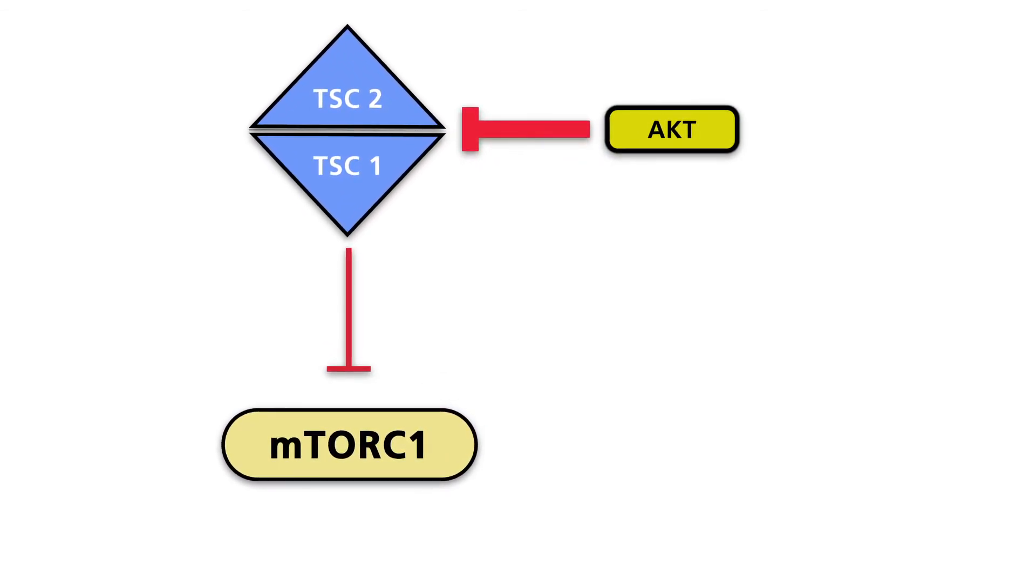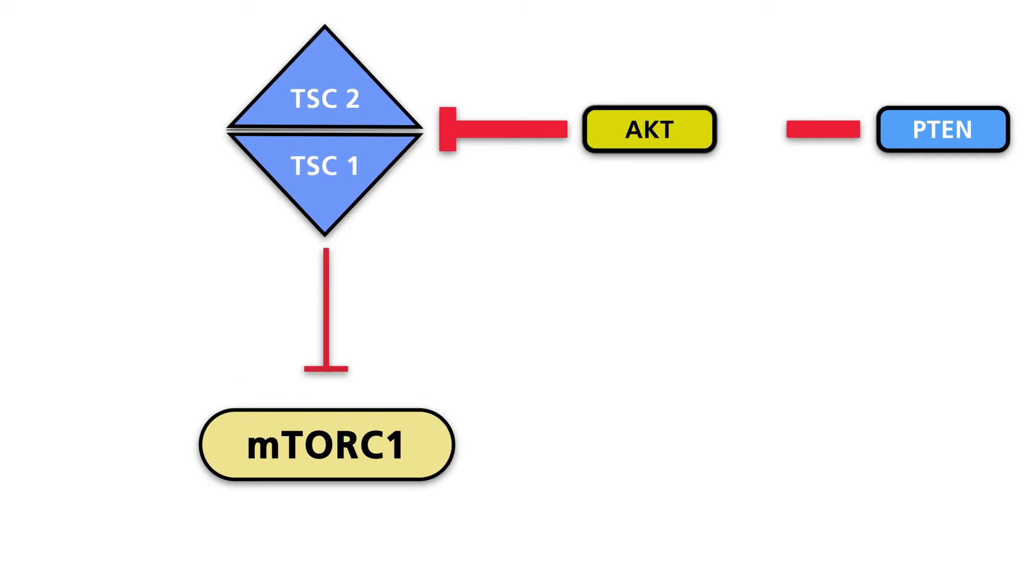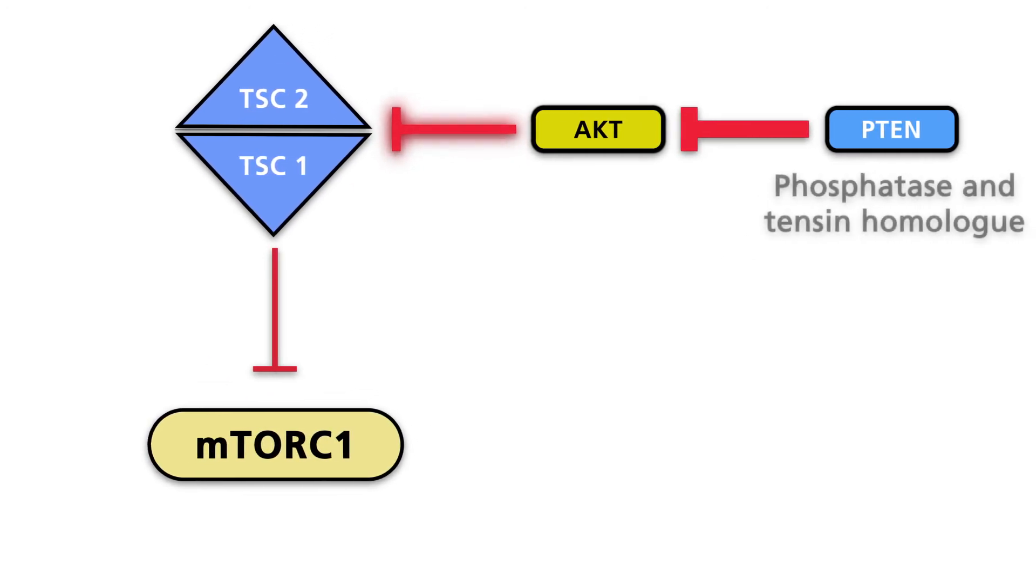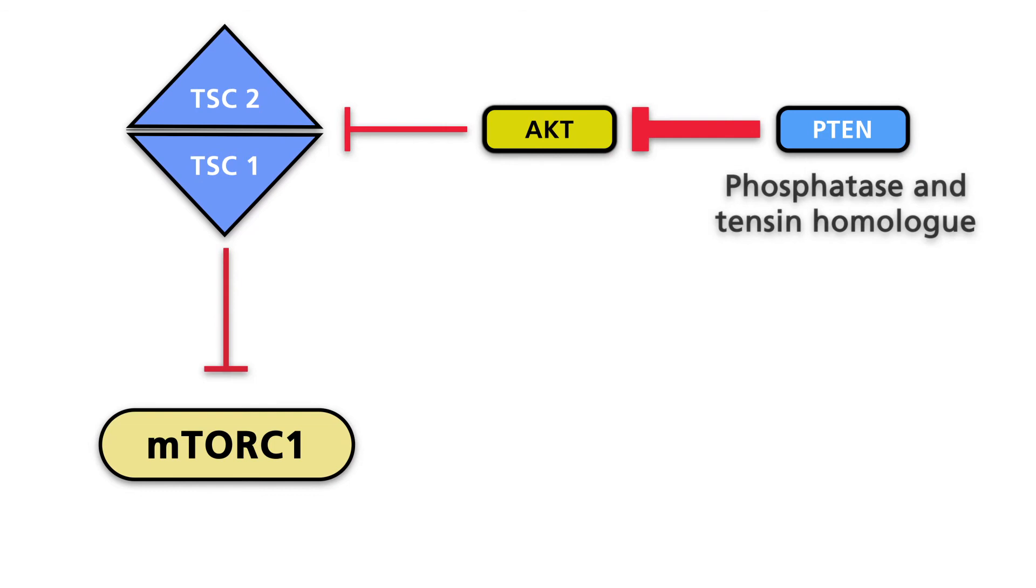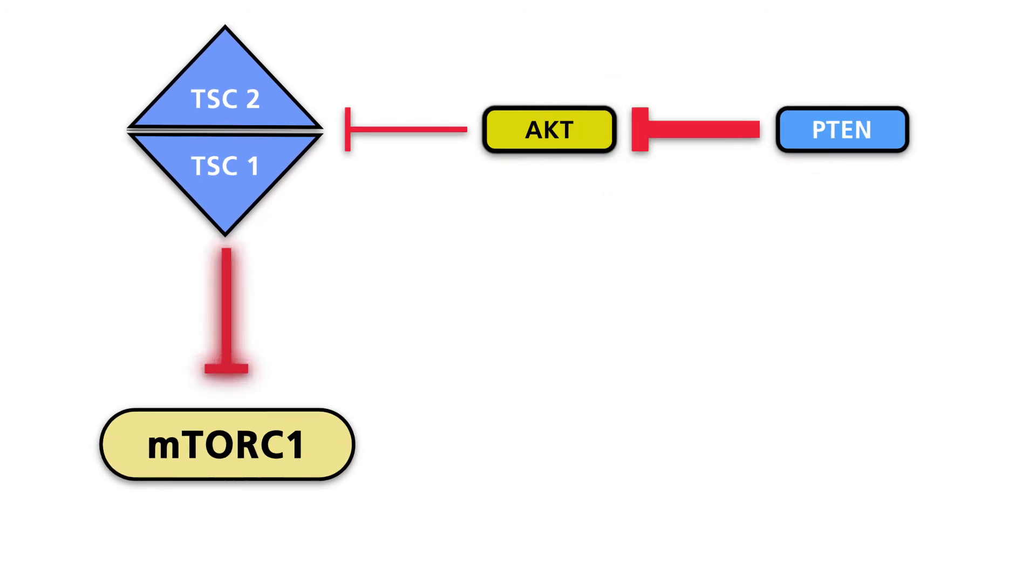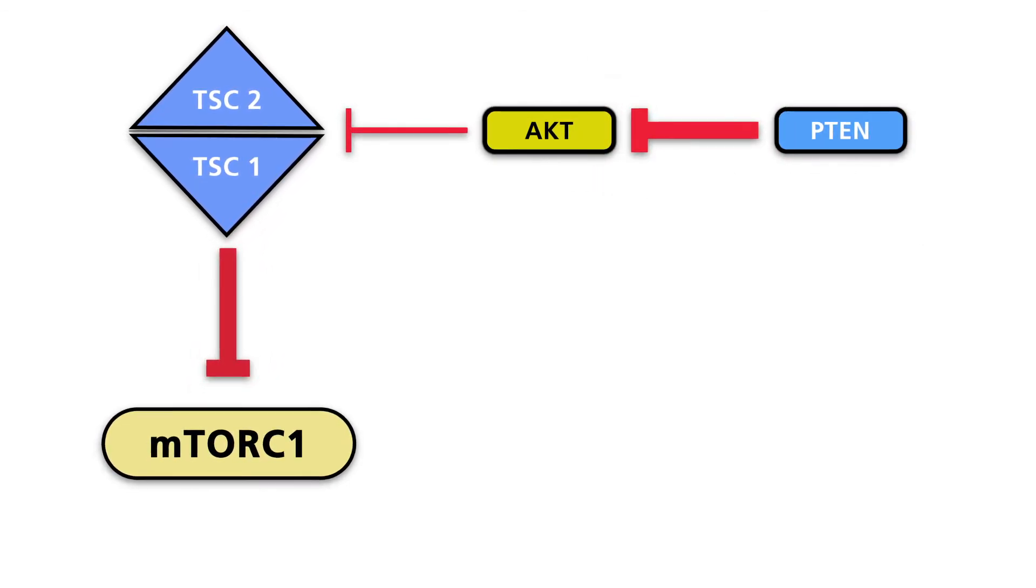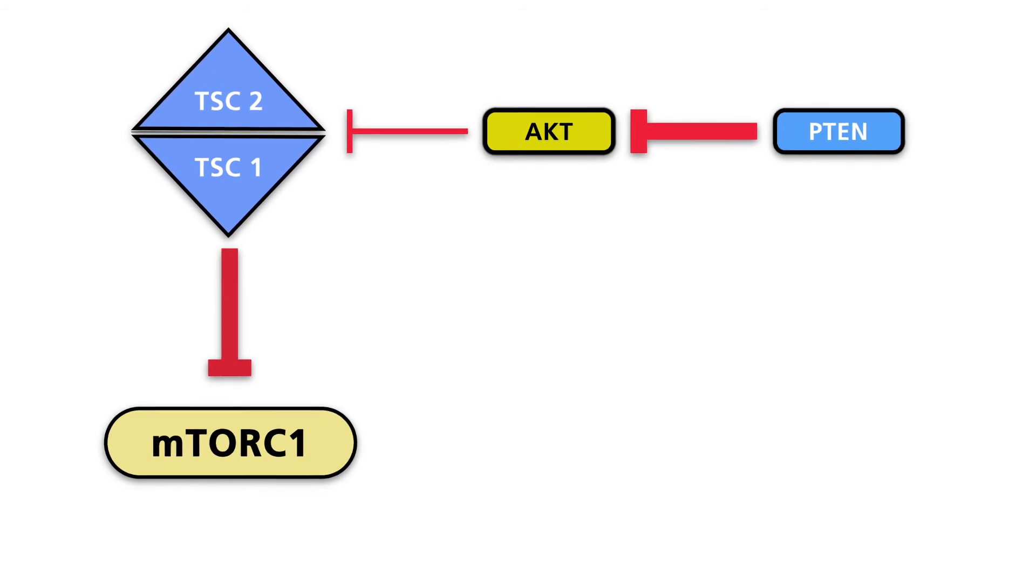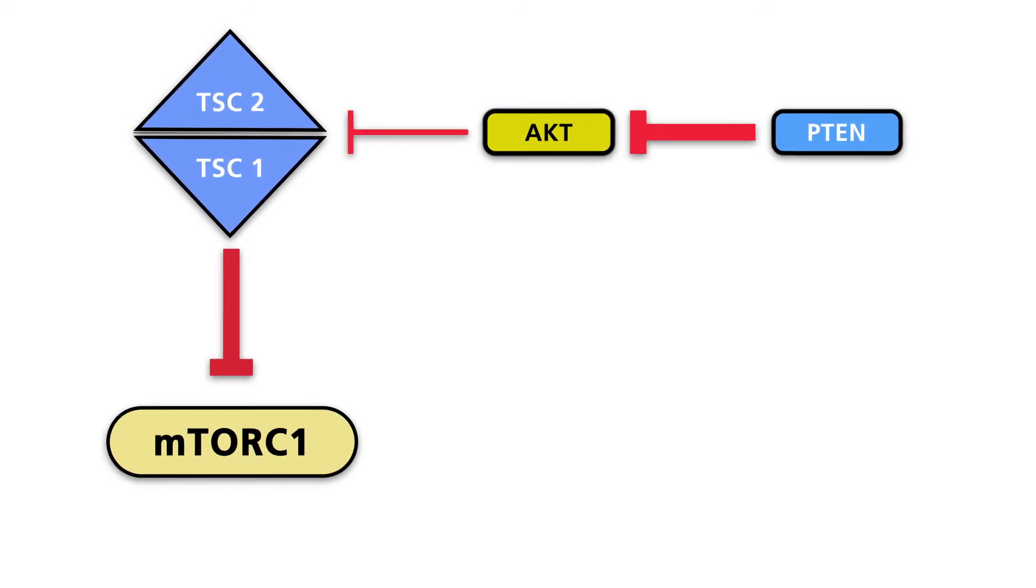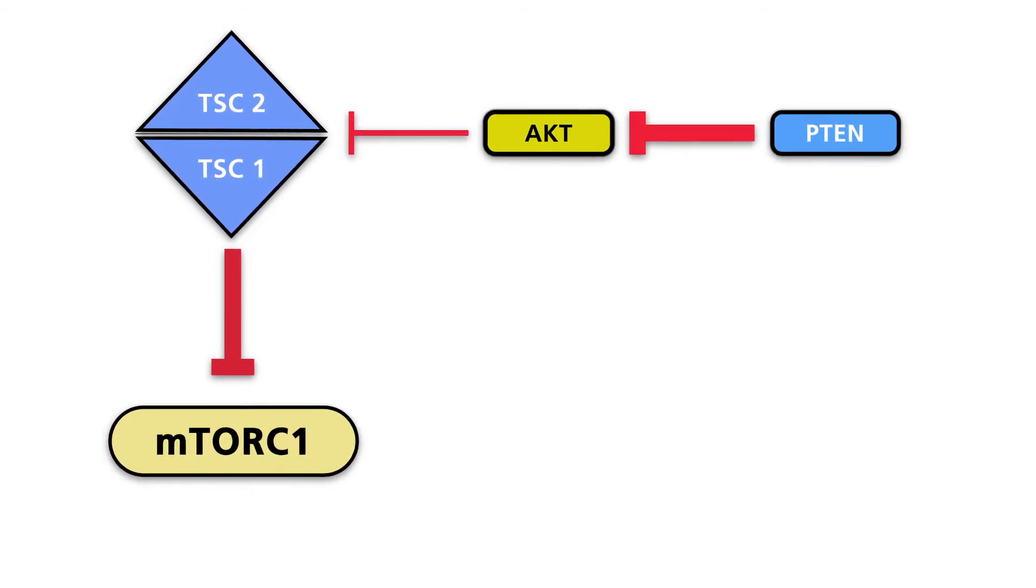The phosphatase PTEN shuts down the PI3-kinase pathway. PTEN counteracts inhibition of the TSC1-TSC2 complex via AKT. As a consequence, TSC1-TSC2 inhibits the activity of mTOR complex 1.